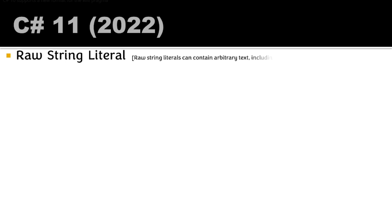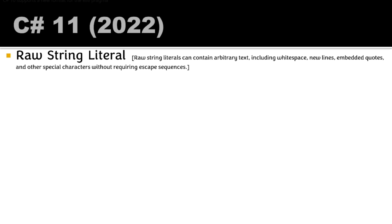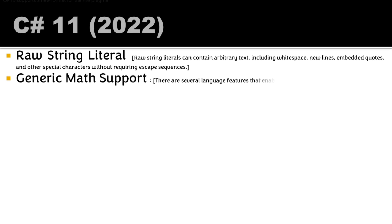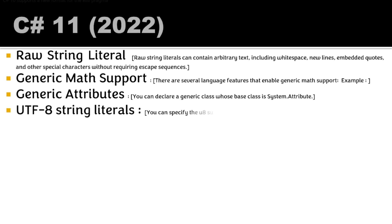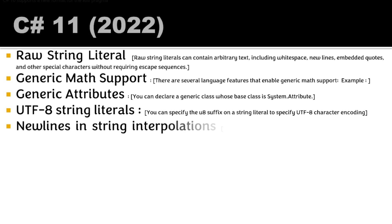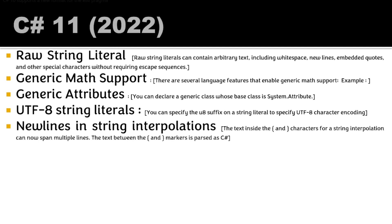C# 11.0, which came in 2022, introduced raw string literals — large string literals can contain arbitrary text including whitespace, newlines, and special characters without requiring escape sequences. Generic math support was added with several language features. Generic attributes allow declaring a generic class whose base class is System.Attribute. UTF-8 string literals let you specify a UTF-8 suffix to encode strings. New lines in string interpolation allow writing multi-line expressions inside interpolated string curly braces.